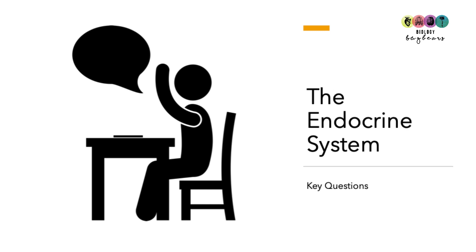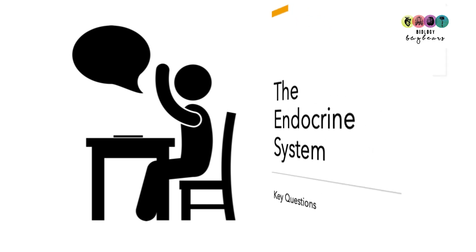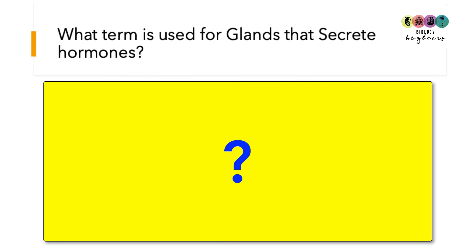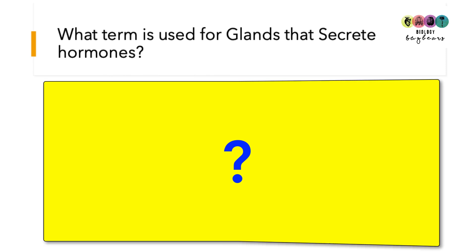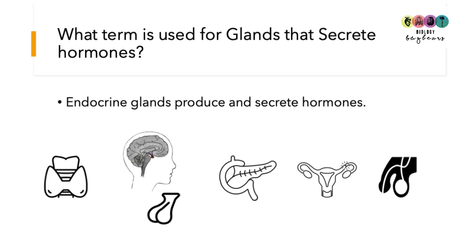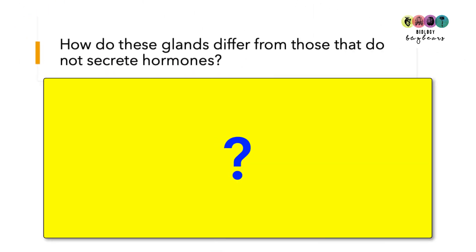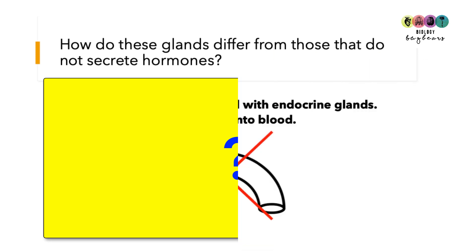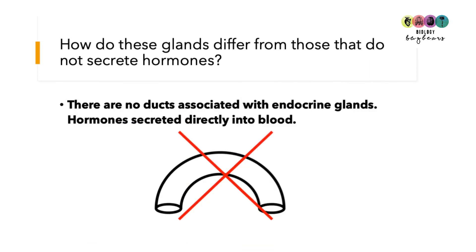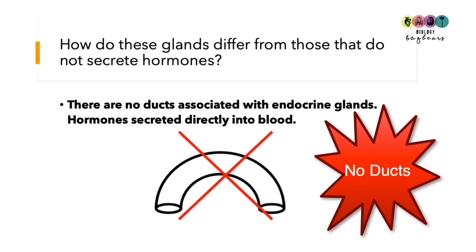You've been studying the endocrine system and some key questions come up similar to these. Your first question might be: what term is used to describe glands that secrete hormones? It's endocrine glands — they produce and secrete hormones. The next question is how do these glands differ from those that do not secrete hormones? In endocrine glands there are no ducts; the hormones are secreted directly into the blood.